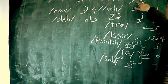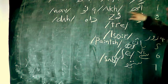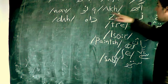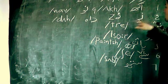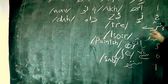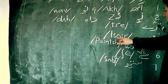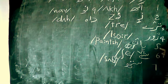And in Kashmiri: it's Sifr, then it's Ak — that's the IPA — then Z, then Tre, then Chor for four.